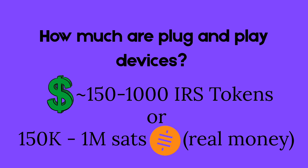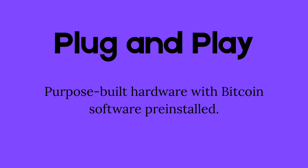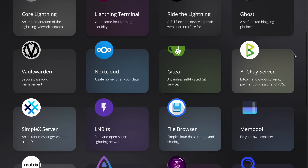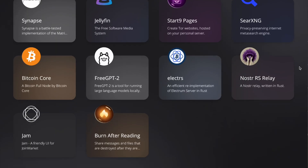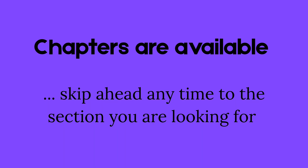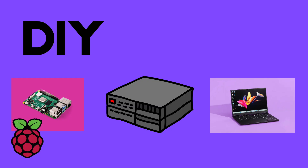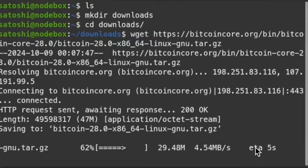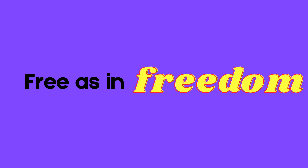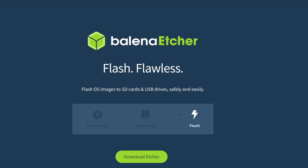If you want a dedicated machine and don't mind spending a little bit, plug-and-play devices are a great option. These are purpose-built computers that come preloaded with custom open-source software designed specifically for running Bitcoin and Bitcoin-related applications — everything's set up out of the box. If you feel like tinkering and want to save costs, you can do a DIY build on your own hardware, even something as small as a Raspberry Pi, a mini PC, or a repurposed old laptop. You can go bare-bones with command-line-only Linux and install Bitcoin Core manually, or flash a free node operating system for a more user-friendly experience.